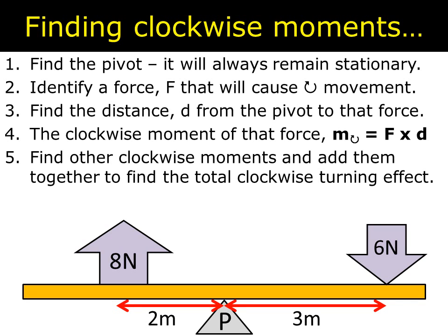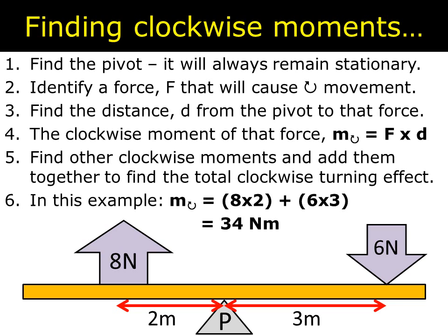You then find all the other clockwise moments and you add them all together to find the total clockwise turning effect. The total clockwise moment of all the forces acting together. So in this case for this particular pivot the total clockwise moment will be 8 times 2 which is 16. Plus 6 times 3 which is 18. Gives us a grand total of 34 newton meters clockwise.